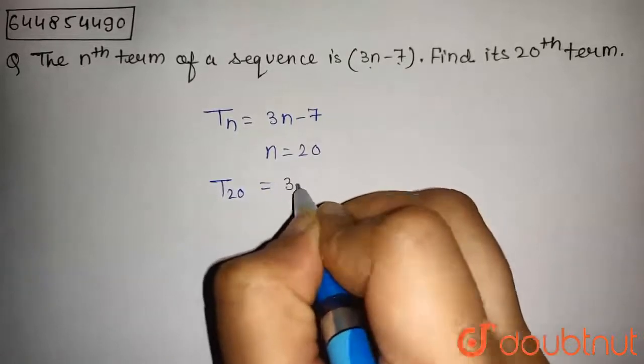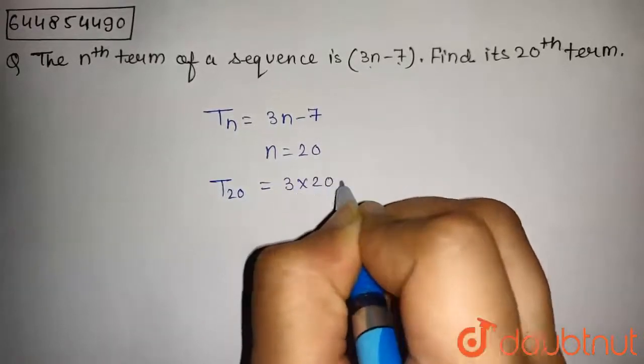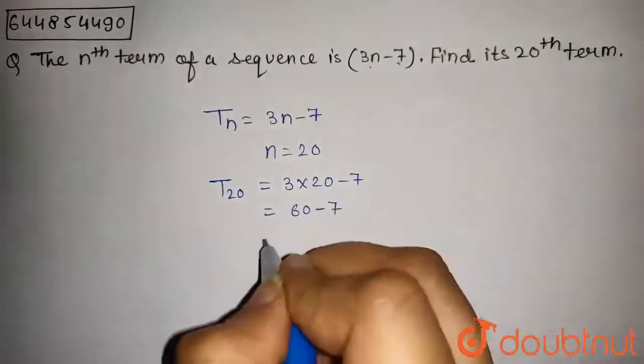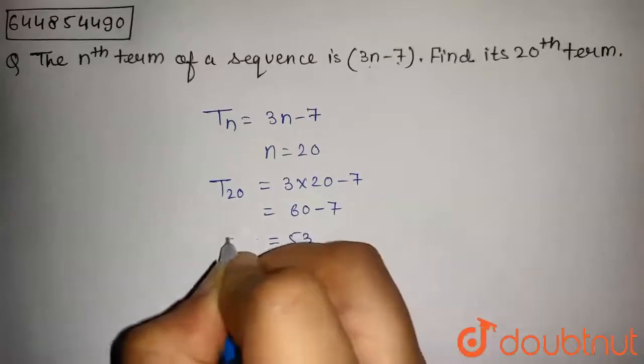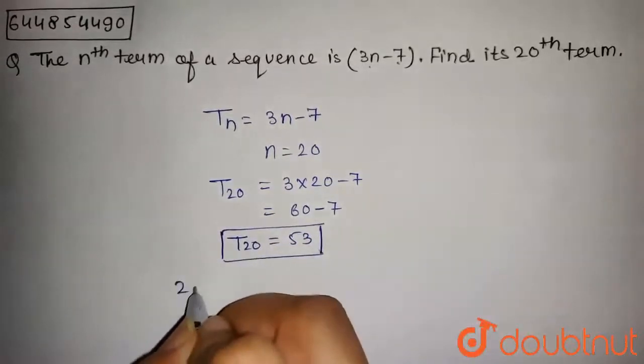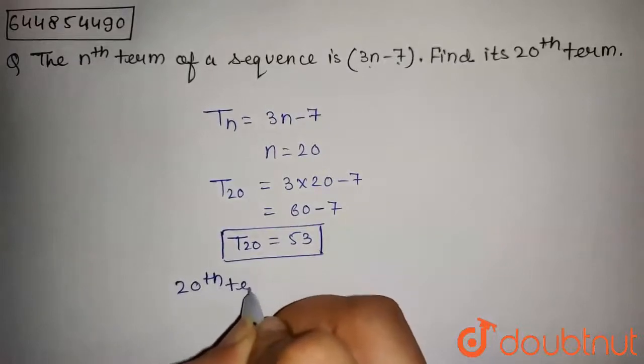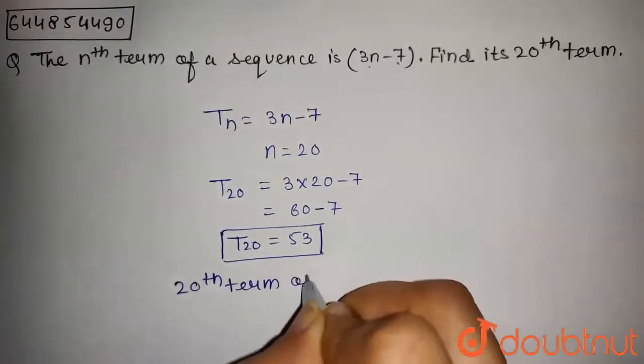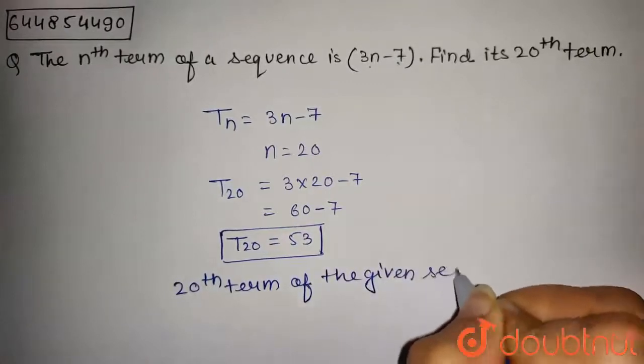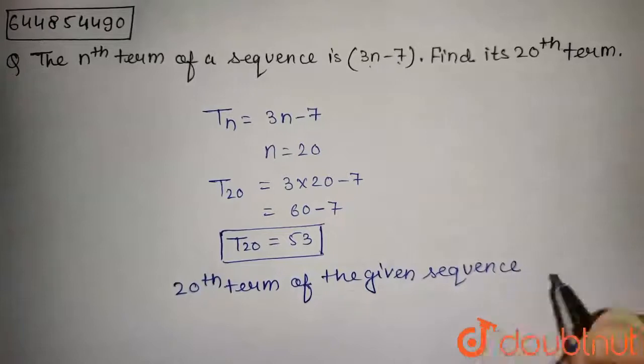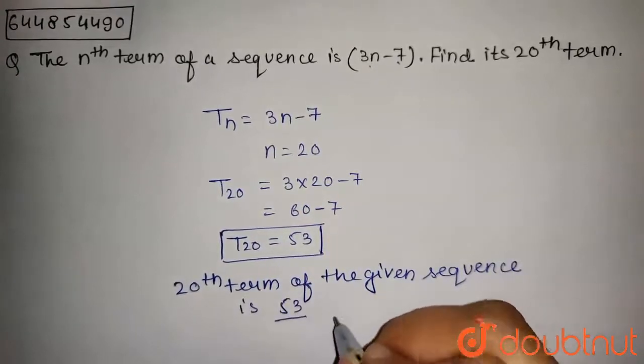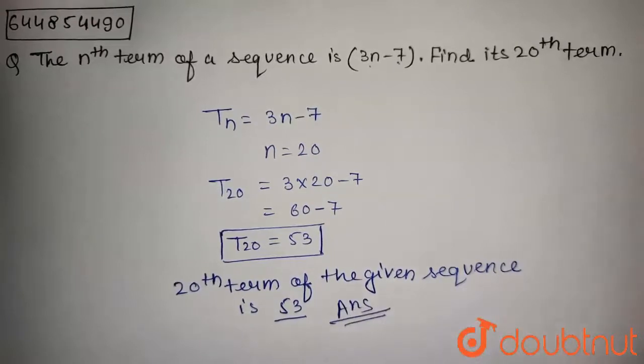It will be 3 into 20 minus 7, which will be 60 minus 7, which equals 53. So the 20th term of the given sequence is 53. Therefore, 53 is the answer to this question.